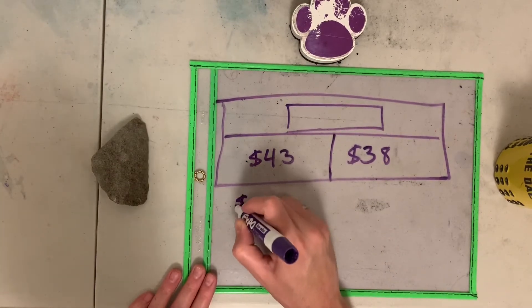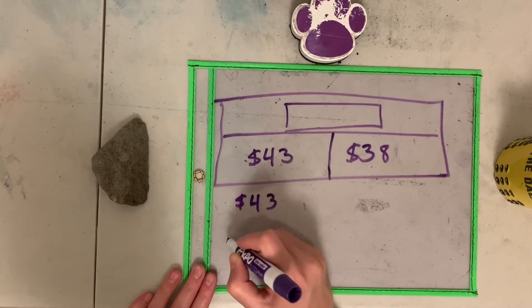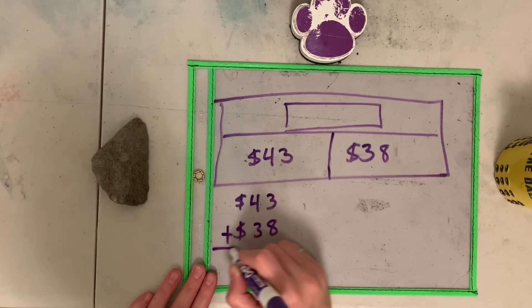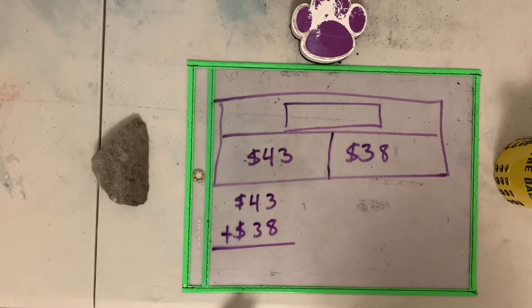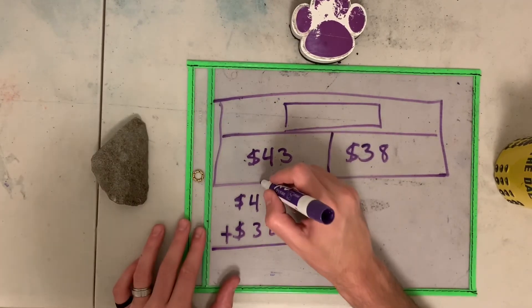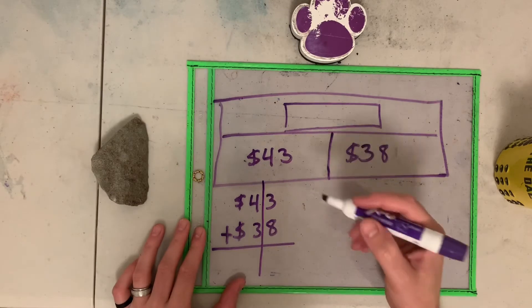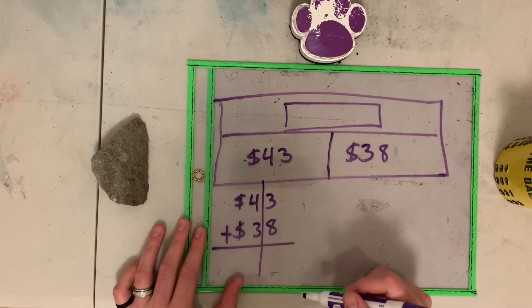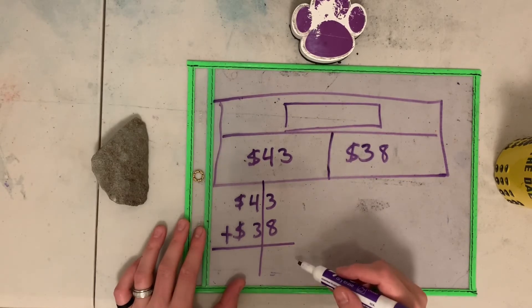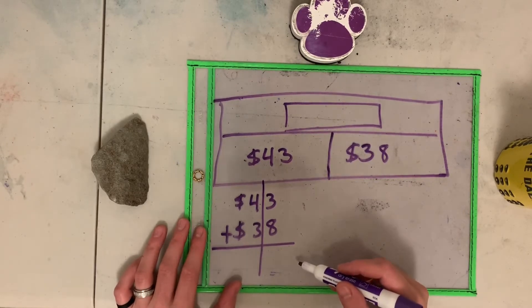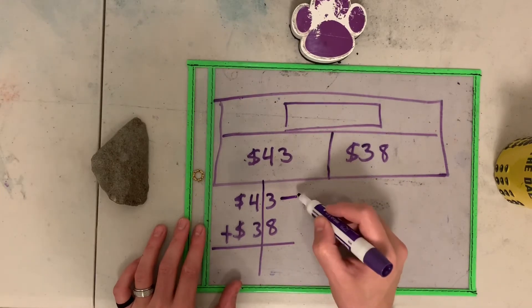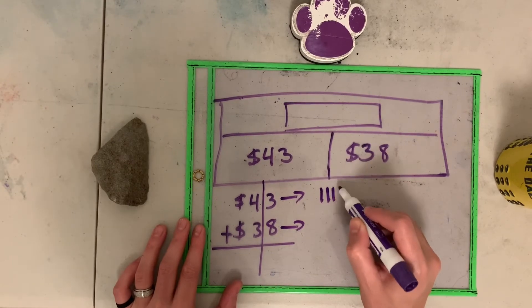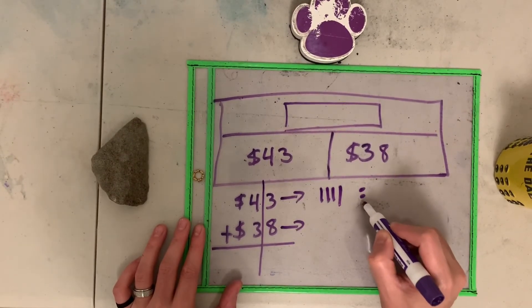So we're adding forty-three plus thirty-eight dollars. And this is just like the HTO. So I'm going to draw the line in the middle. I'm going to add three plus eight and four plus three. But we need to be careful. So I'm going to do the base ten block strategies. So we have forty-three. I have one, two, three, four tens and three ones. One, two, three.